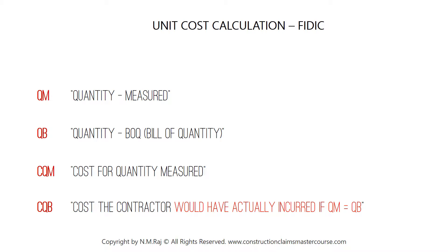Now, let's review the elements associated with FIDIC's unit cost calculation. First, we have QM, which is equal to the remeasured quantity. Second, we have QB, which is equal to the quantity in the BOQ. CQM is the cost associated with the remeasured works. And finally, we have CQB, which pertains to the cost the contractor would have actually incurred if QM was equal to QB.